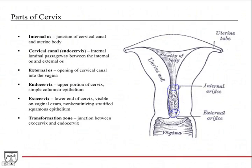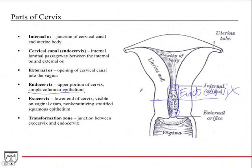The endocervix is the upper portion of the cervix — roughly this upper half. What's important to note about the endocervix is that it's lined by simple columnar epithelium, which makes sense because it's closer to the body of the uterus, which is also simple columnar epithelium on its luminal surface.